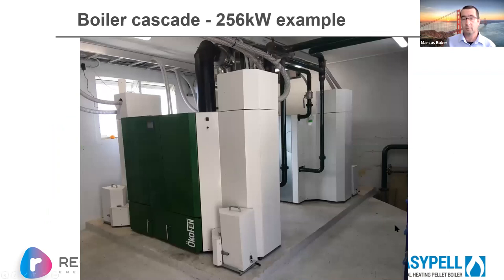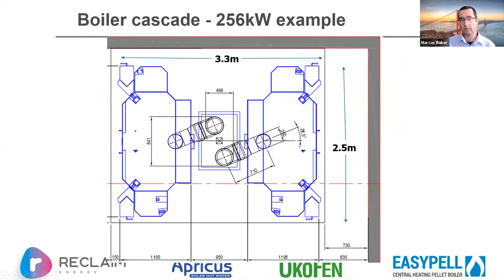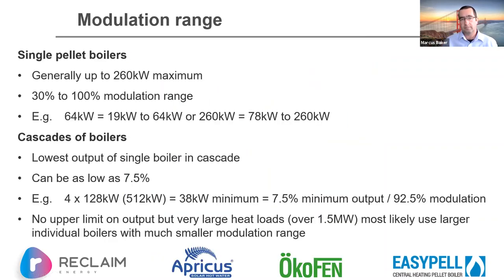As an example, a 256-kilowatt cascade at a college uses two 128-kilowatt units, each with their own pellet feed and pump, with one control system — one master and three slaves with entirely balanced duty cycling. The footprint is 3.3 metres by 2.5 metres. They're not as compact as gas boilers but not ridiculous — they'd also fit in a 20-foot shipping container.